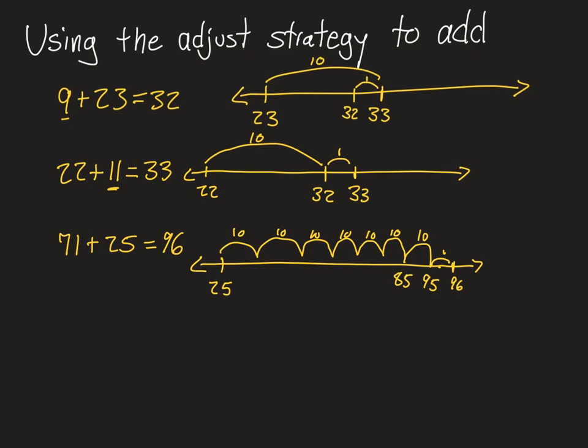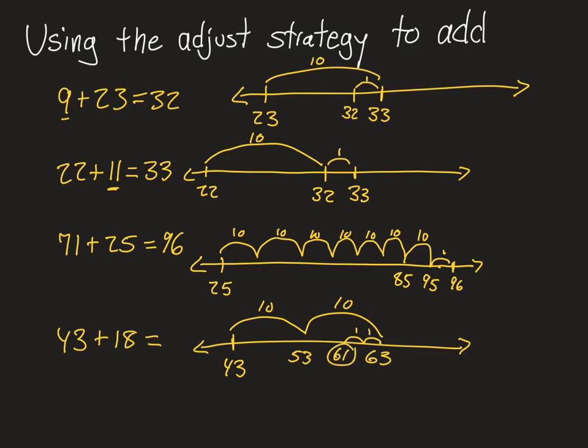Last example. 43 plus 18. So here I know 18 is close to a landmark number. So I'm going to start with a bigger number. I'm going to add 20. And I'm going to do two jumps of 10. So that puts me at 53, 63. But now I've added, I know 20 is two more than 18. So I need to jump two back. And that takes me to 61. So 43 plus 18 is 61.